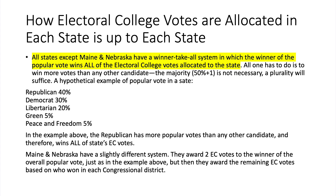Maine and Nebraska have a slightly different system. They award two electoral college votes to the winner of the overall popular vote, and the remaining votes are allocated based on who won the plurality in each congressional district. It may well happen that whoever won the plurality statewide also won each individual congressional district.